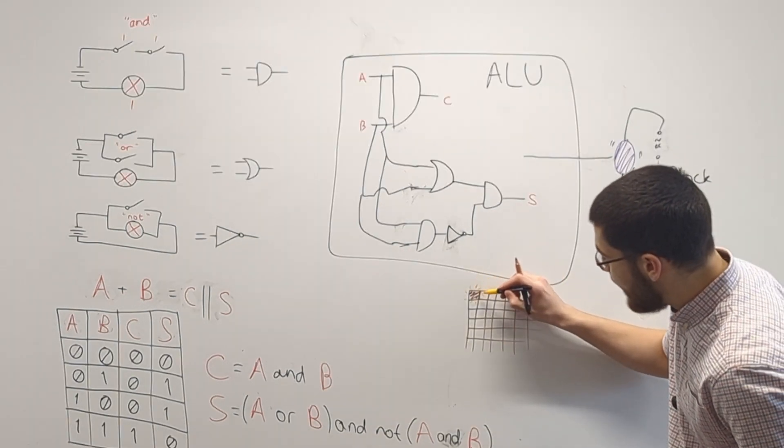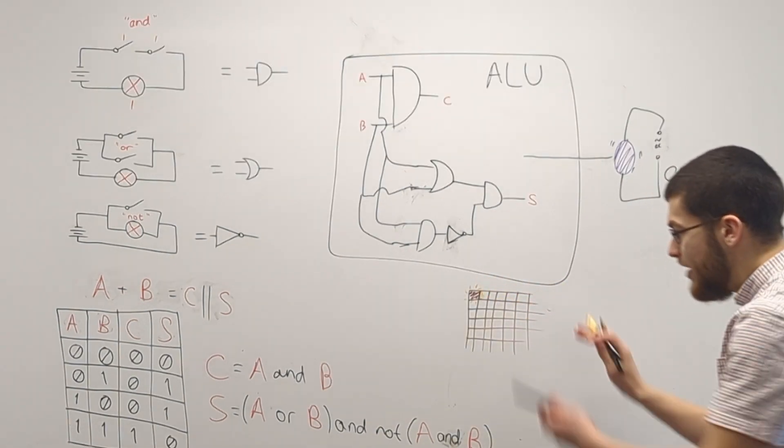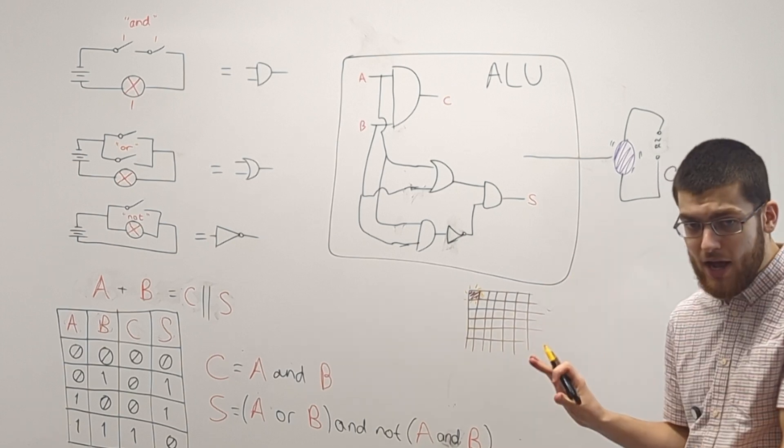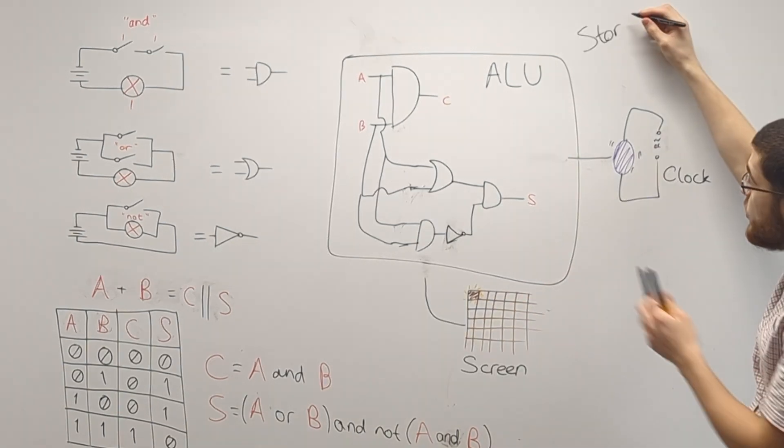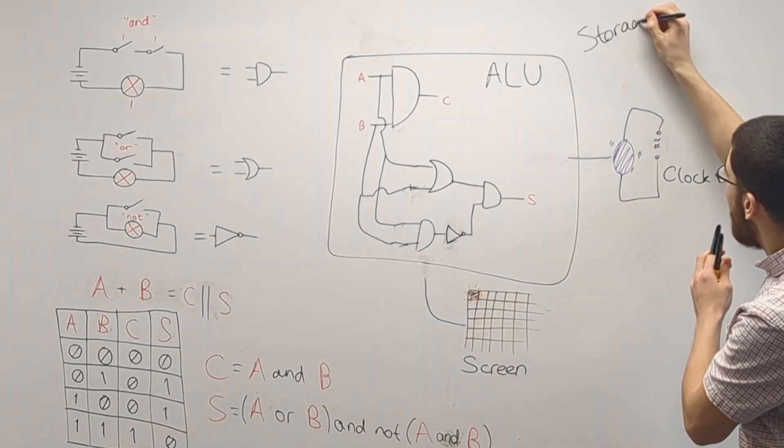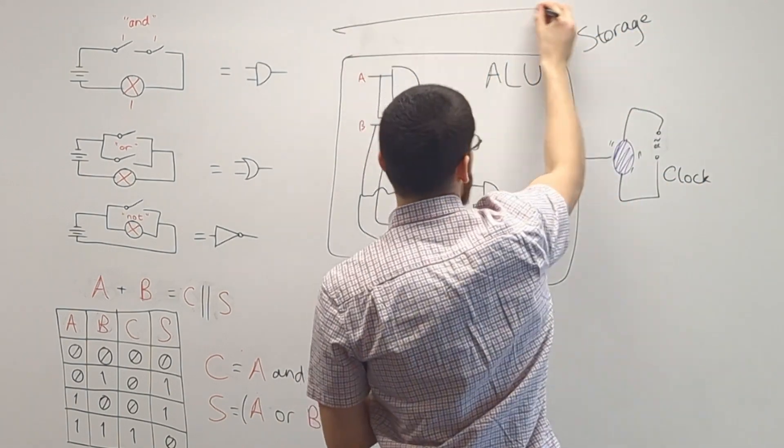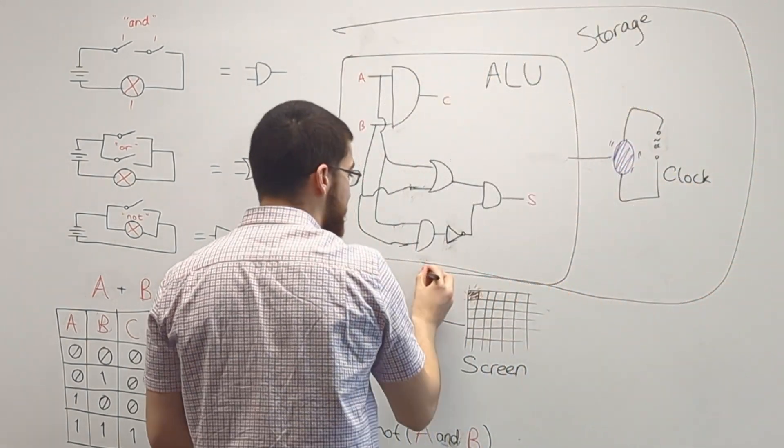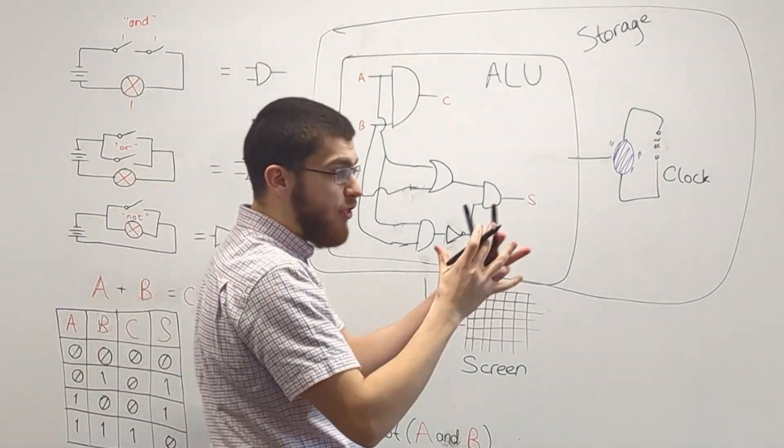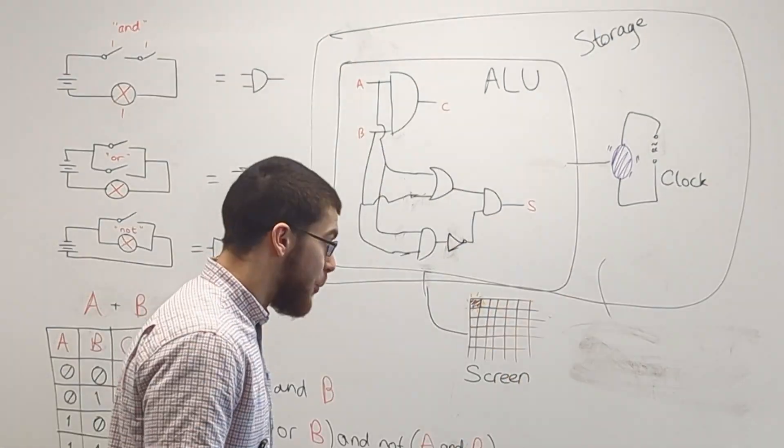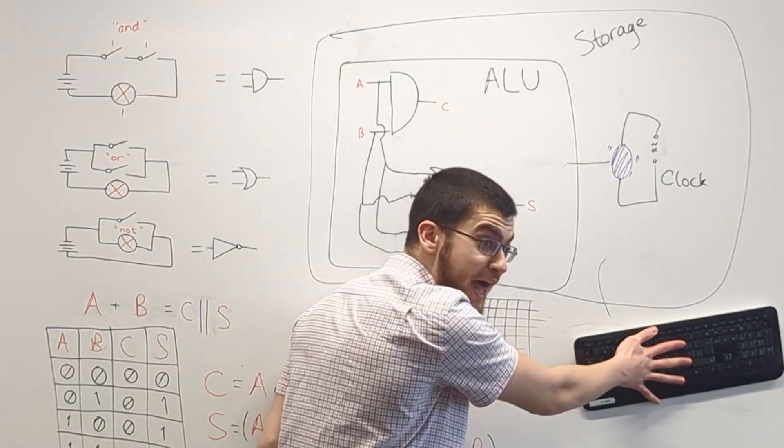Then we found another rock that starts glowing when you put a current through it, so we arranged thousands of them into a grid here, and we call this a screen. Then when you give the ALU and the clock some storage, and then connect them all together, you create a CPU, or a central processing unit. This does all the thinking for the computer. Then if you hook up a keyboard, you get a computer!